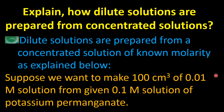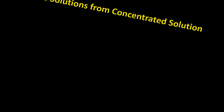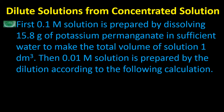Suppose we want to make 100 cm³ of a 0.01 molar solution from a given solution which is 0.1 molar. First, the 0.1 molar solution is prepared — in this case, potassium permanganate (KMnO₄), where K is potassium, Mn is manganese, and O is oxygen.